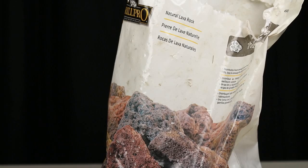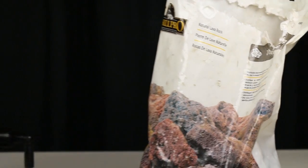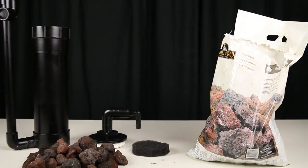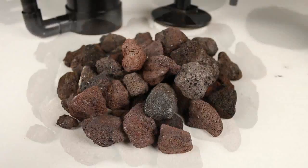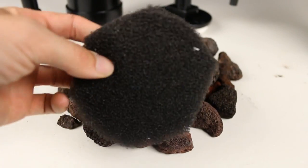For media I went with lava rock. I got seven pounds for five bucks. A highly porous and long lasting type of rock that serves as an excellent biological media. For mechanical I went with some spare filter sponge I had and cut it to size of the pipe.